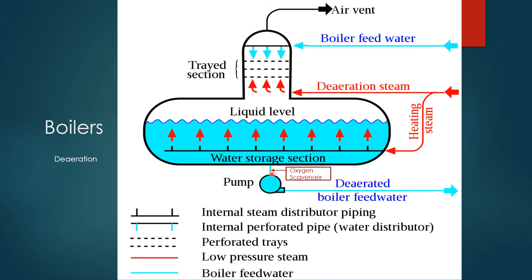The level in the deaerator is maintained at around 50%. The two outlet headers are collected into a single line. At the outlet line immediately after the storage section, the oxygen scavenger is injected. The pump section maintains around 1.4 to 1.6 bar (1.5 bar), so even at 106 to 108 degrees centigrade, water vapor will not form, avoiding vapor lock or cavitation in the boiler feed water pump. The deaerator situated at 14 to 15 meter height provides sufficient NPSH to avoid cavitation. This outlet feeds boiler feed water to the boiler.